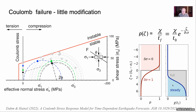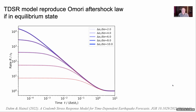The advantage of our model is that we can define also other distribution functions. We tested the model extensively and found that for an equilibrium distribution, we can exactly reproduce all the predictions of the rate-and-state model, including the Omori law, as seen in this comparative figure here.